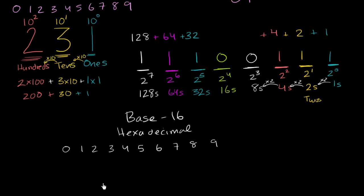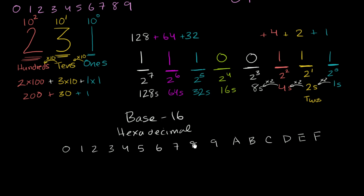But then we're going to need to have six more digits. The convention is to use the first six letters: A, B, C, D, E, and F. You might say this is crazy — these are letters, not numbers. But remember, these are just arbitrary symbols that we've grown to associate with things.